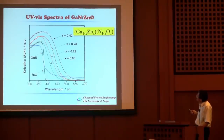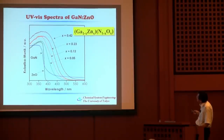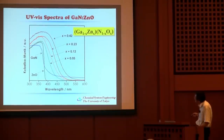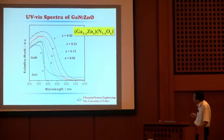The interesting point is that with increasing ZnO content x, the absorption edge shifts into the visible light region. When x reaches about 0.7, the absorption edge can shift to about 600 nm. This visible-light absorption is what we want to utilize for the water-splitting reaction.